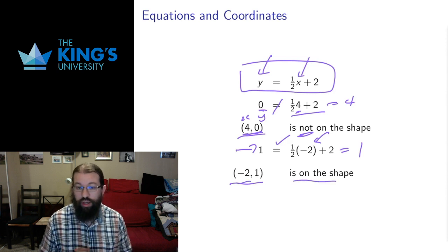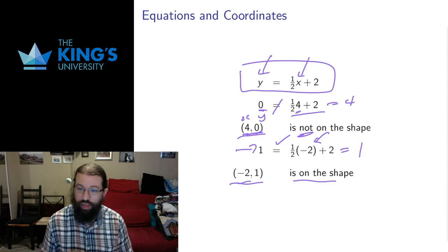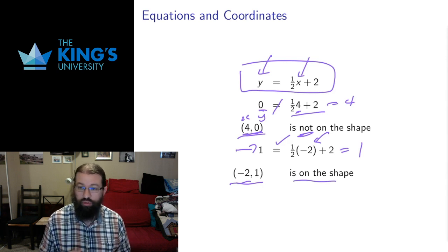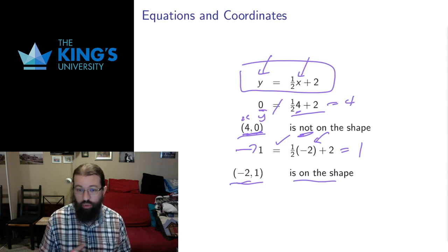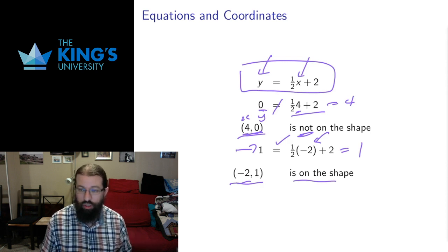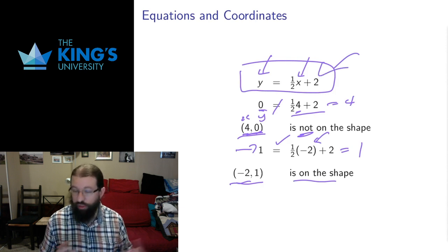So in this way, an equation in the variables x and y corresponds to a set of points. A lot of sets of points can in fact be described by equations, and this is really the power of Cartesian geometry — connecting algebra in an equation to something geometric.